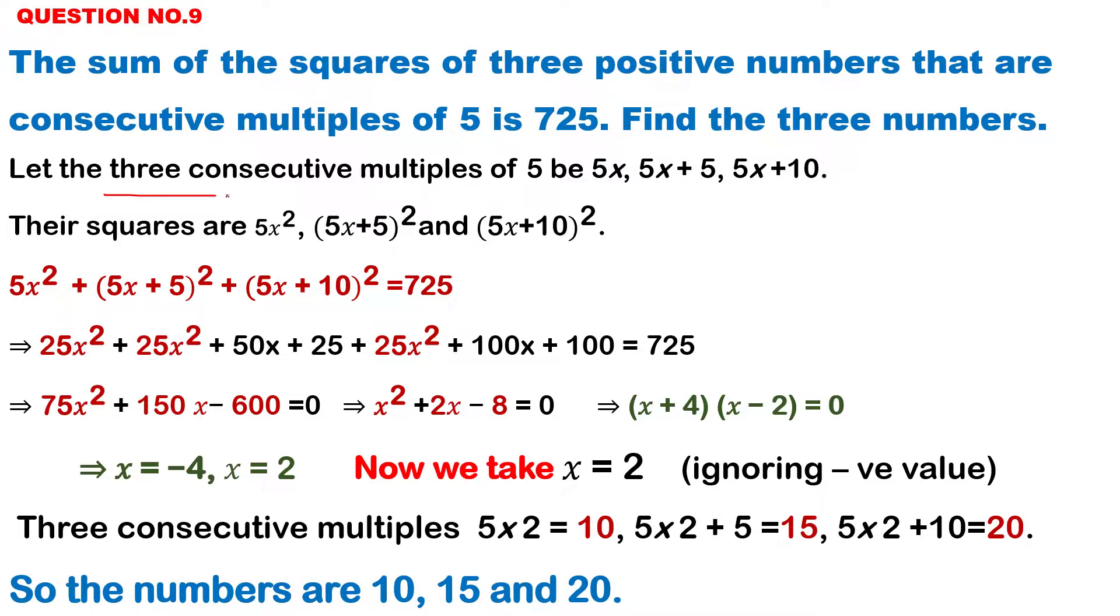So, three consecutive numbers, if we let the multiples of 5, first number will be 5x, second will be 5x plus 5, third is 5x plus 10. These are the three consecutive multiples of 5.